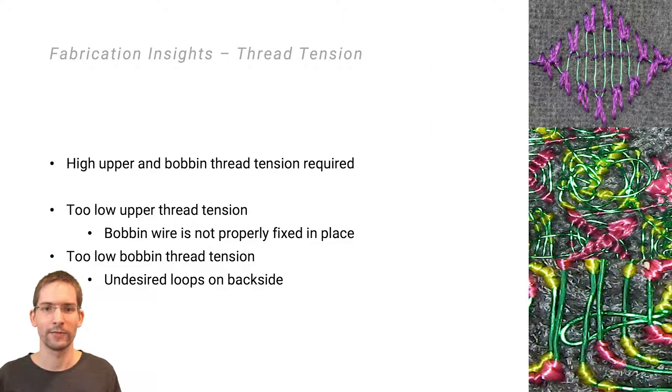When embroidering metal wires, thread tension settings for upper and lower thread have to be particularly high and also well balanced. When the upper thread tension is set too low, the thread can get pulled out of place by the bobbin, resulting in distorted electrode patterns.